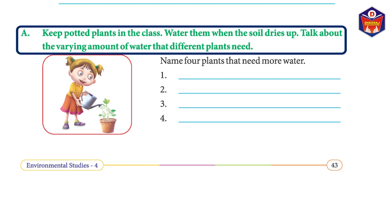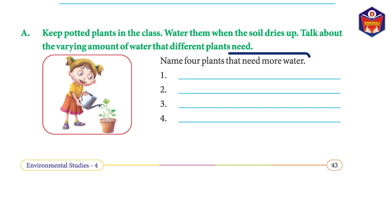Activity: Keep potted plants in the class. Water them and watch the soil. Talk about the varying amounts of water that different plants need. Name plants that need more water.